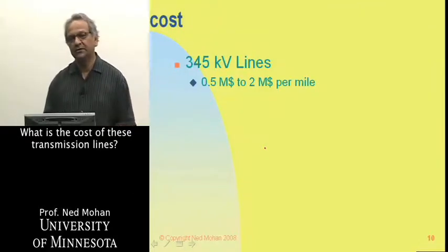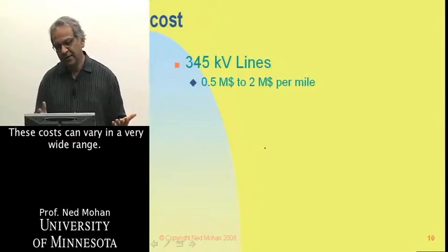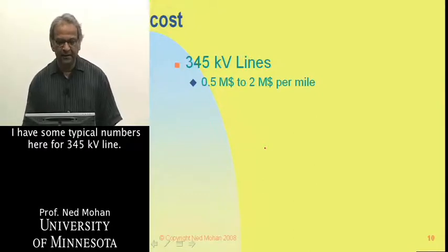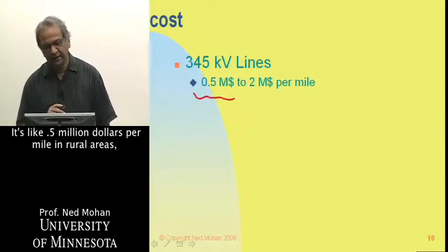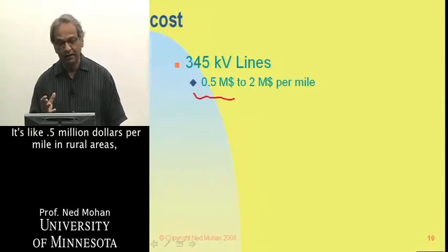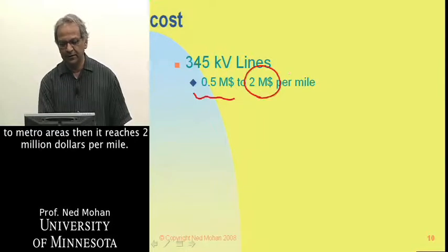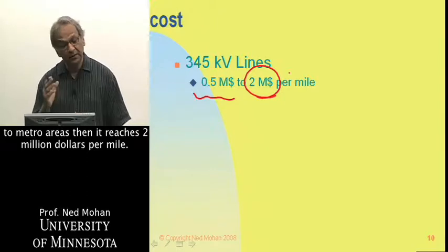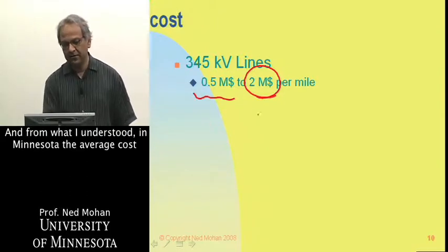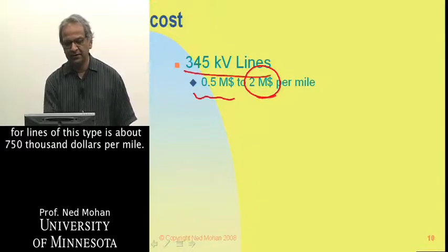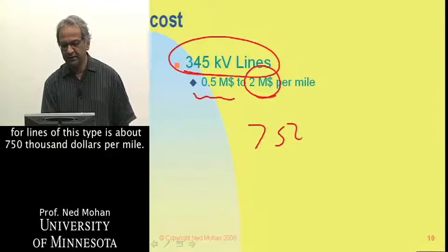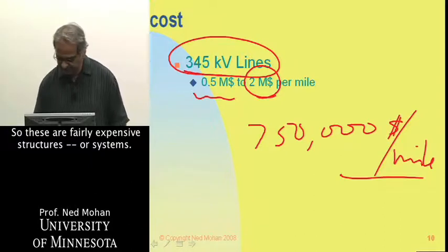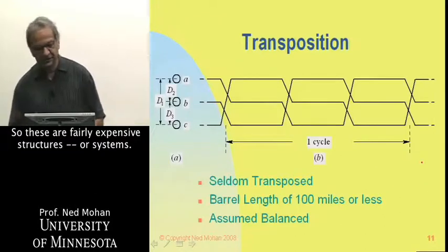What is the cost of these transmission lines? These costs can vary over a wide range. For a 345 kV line, it's about $0.5 million per mile in rural areas, but closer to metro areas it can reach $2 million per mile. In Minnesota, the average cost for lines of this type is about $750,000 per mile. So these are fairly expensive systems.